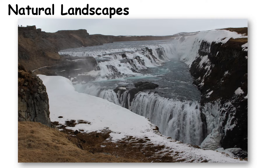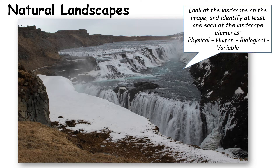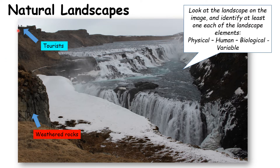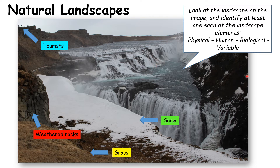Here is a natural landscape created totally by mother nature. Within this landscape, let's look for one example of each category. These weathered rocks on the left-hand side are totally natural — a physical feature. Next we've got the tourists, just visible top left having a look at the spectacular scene — that's the human side. Thirdly we've got the grass, the biological part. And fourthly, the things that could change from day to day: the snow on the ground. This is a spectacular waterfall in Iceland — one day it could be quite warm, come back the next day and it could be freezing cold because of wind chill.